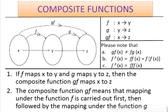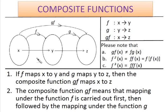Composite function: if f maps x to y, and g maps y to z, then the composite function gf maps x to z. The composite function gf means that mapping under the function f is carried out first, then followed by the mapping under the function g.